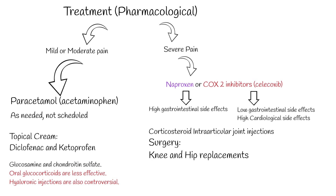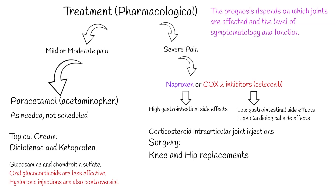In patients with knee or hip osteoarthritis who have failed multiple non-pharmacologic and pharmacologic treatment modalities, surgery is the next option. Failure rates for both knee and hip replacements are quite low, and they can provide pain relief and increased functionality. The prognosis depends on which joints are affected and the level of symptomatology and functional impairment. Some patients remain relatively unaffected, while others can experience severe disability. In some cases, joint replacement surgery offers the best long-term outcome.